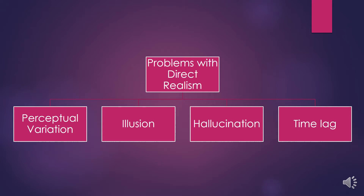Apples exist out there and have their own properties — colour, shape, size, density. We then looked at the issues of perceptual variation, looking at Bertrand Russell, who described how we see a table in so many different lights and as a different shape depending on where we stand. That led us to consider that what we directly perceive is not necessarily the object itself.